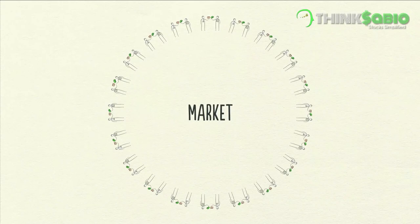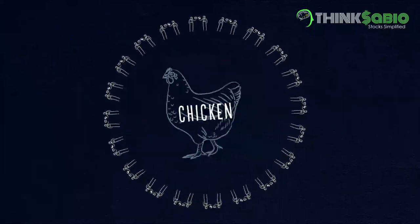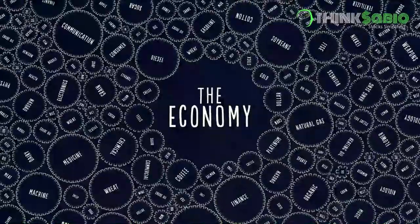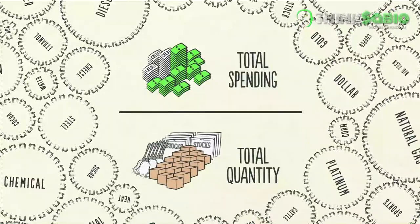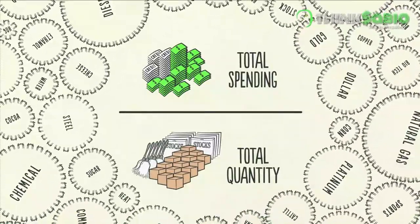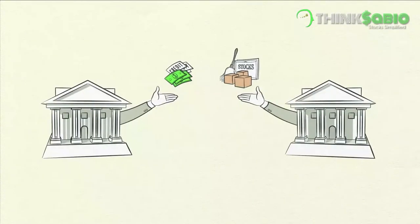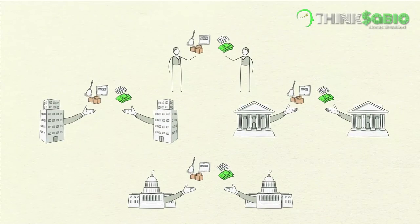A market consists of all the buyers and all the sellers making transactions for the same thing. For example, there is a wheat market, a car market, a stock market, and markets for millions of things. An economy consists of all of the transactions in all of its markets. If you add up the total spending and the total quantity sold in all of the markets, you have everything you need to know to understand the economy. People, businesses, banks, and governments all engage in transactions, exchanging money and credit for goods, services, and financial assets.